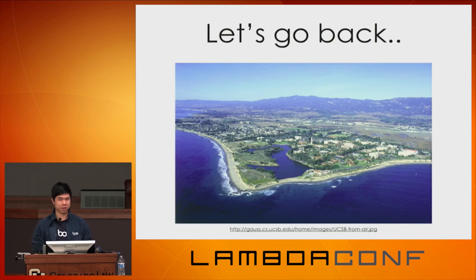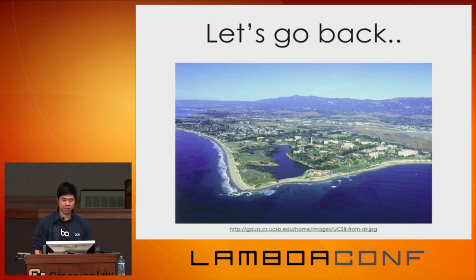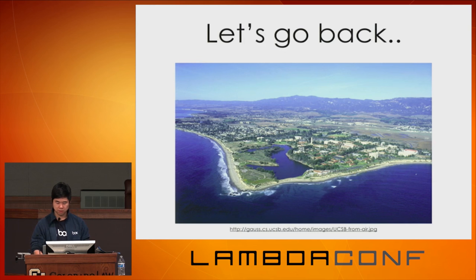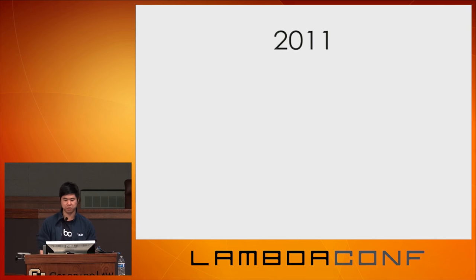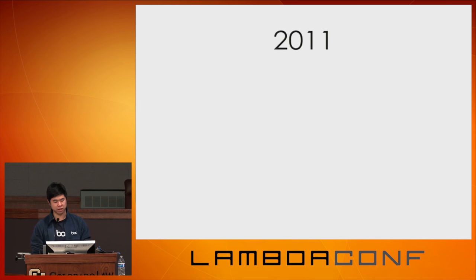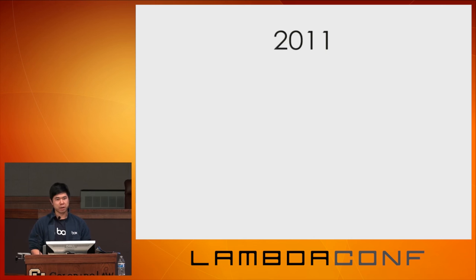I'm going to start off with where I got into computer science and where I learned programming — at UC Santa Barbara. UC Santa Barbara is in Southern California. It's where I first learned CS, got into math and physics, and also started really enjoying functional programming. I went to UCSB in 2010, and I'll start in 2011, when I began taking the more interesting classes. The first languages I learned were popular imperative languages like Python, C, and C++.